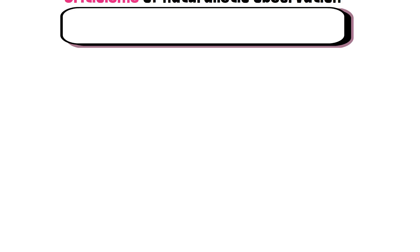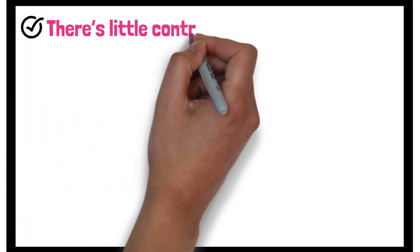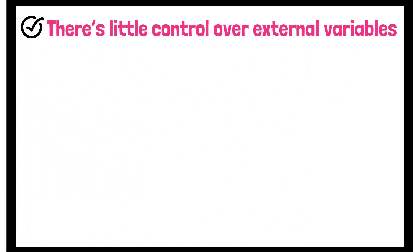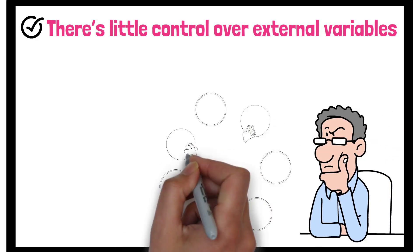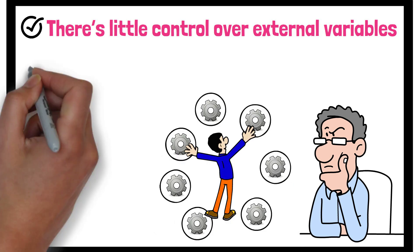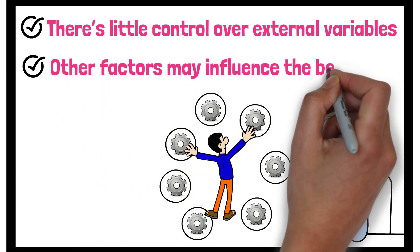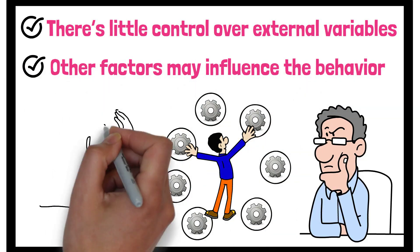However, naturalistic observation is not without its criticisms. One criticism is that there is little control over external variables, which can make it difficult to determine the cause of the observed behaviour. Since researchers cannot control the environment, other factors may influence the behaviour, making it harder to draw clear conclusions.